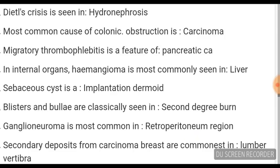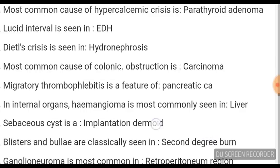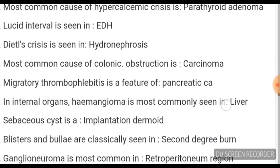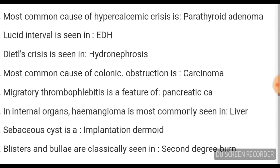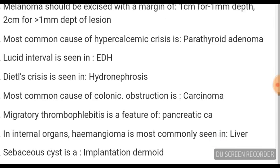Ganglioneuroma is most commonly seen in the retroperitoneum region. Blisters and bulla are characteristically seen in second-degree burns. Sebaceous cyst is an implantation dermoid. In internal organs, hemangioma is most commonly seen in the liver. Migratory thrombophlebitis is a feature of pancreatic carcinoma.